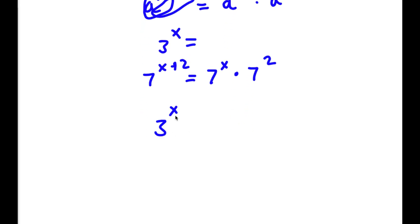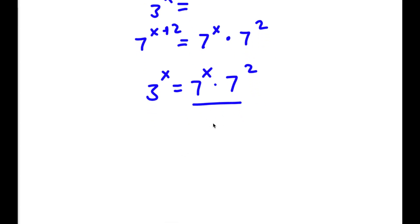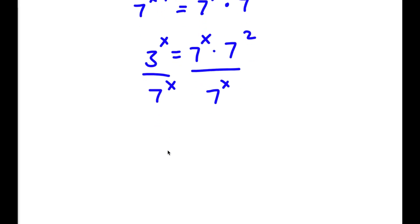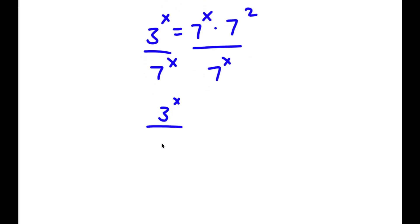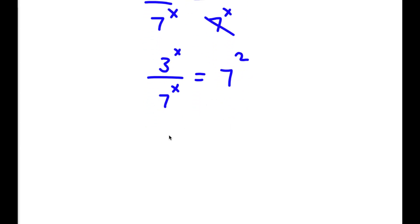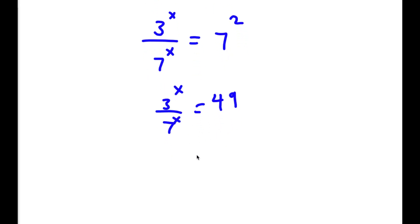So now I have 3 to the power of x is equal to 7 to the power of x times 7 squared. I can divide both sides by 7 to the power of x, so 3 to the power of x over 7 to the power of x — these two cancel out — is equal to 7 squared, which is 49.